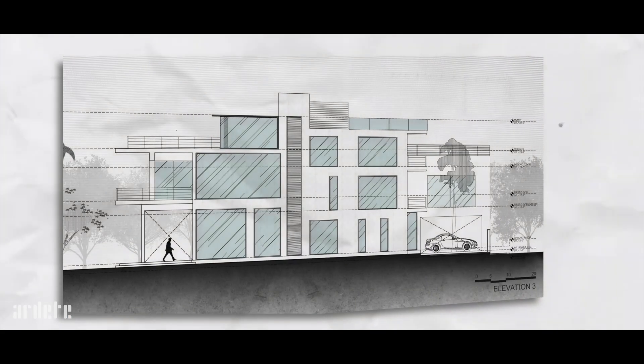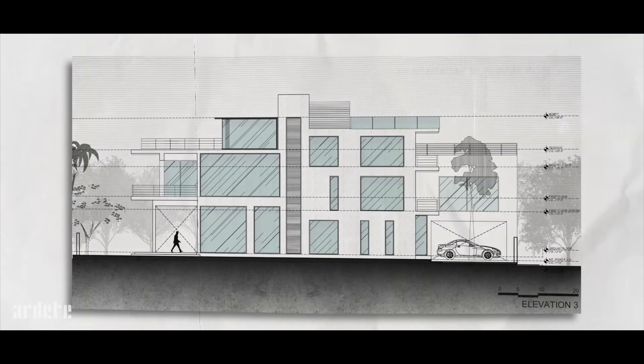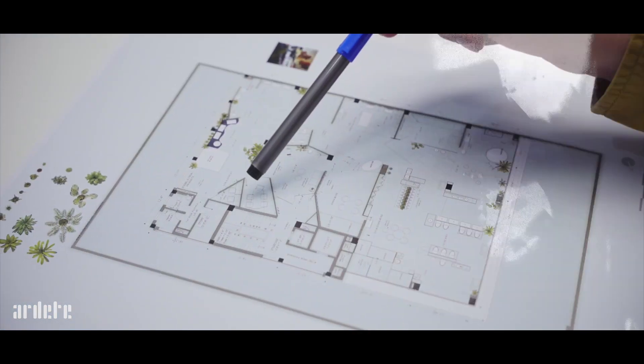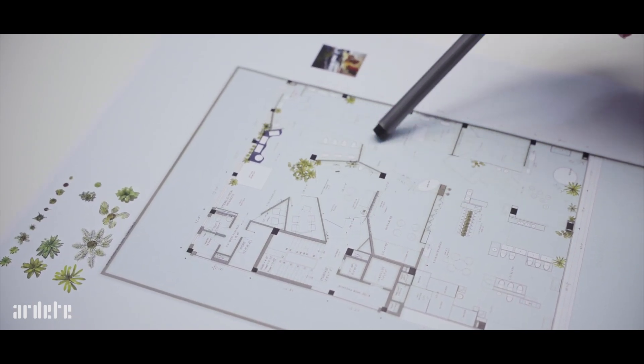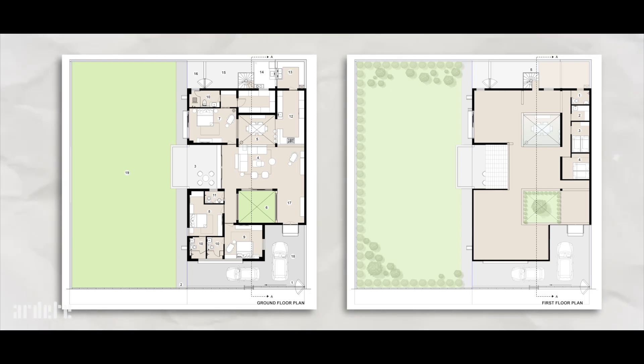Once the concept design is final, we can proceed with local body approvals, structural drawings for the structural consultant, and detailed architectural drawings for site construction. To onboard a contractor, we prepare tender drawings, and for approvals, we provide a complete set of documents to a liaison who develops them as per local norms and submits to the respective department.